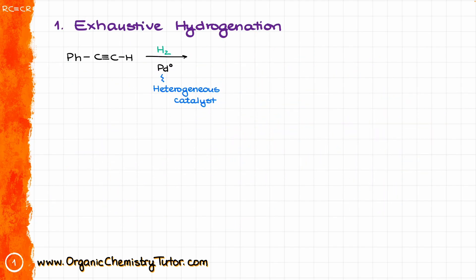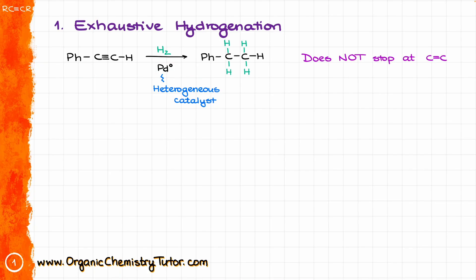The first reaction is exhaustive hydrogenation. We take an alkyne and react it with hydrogen on a heterogeneous catalyst. The heterogeneous catalyst is going to be palladium, though you can also see platinum or nickel commonly used. This reaction does not stop at the formation of the double bond.